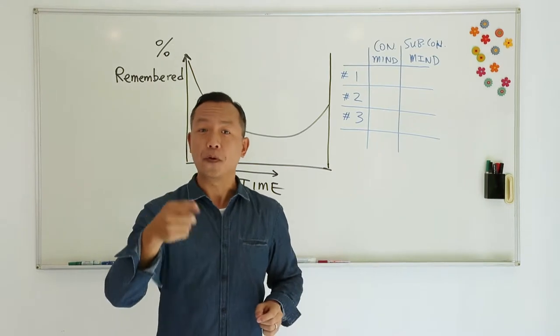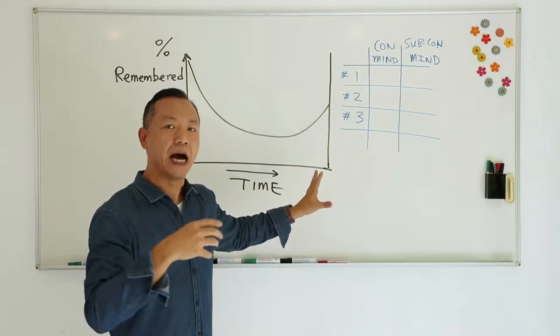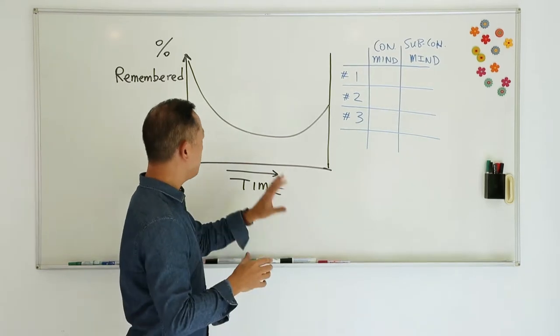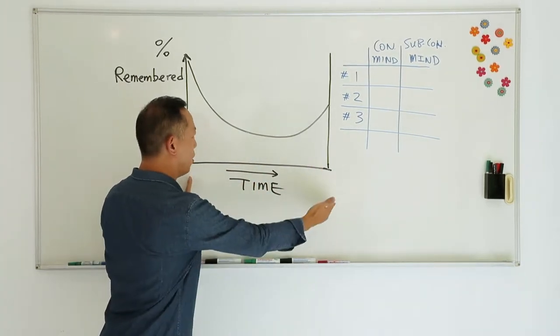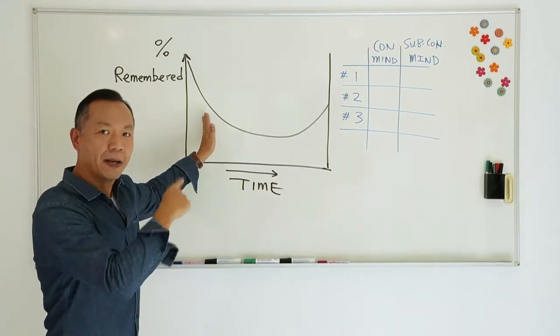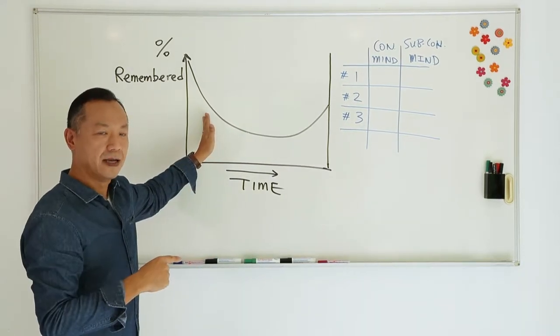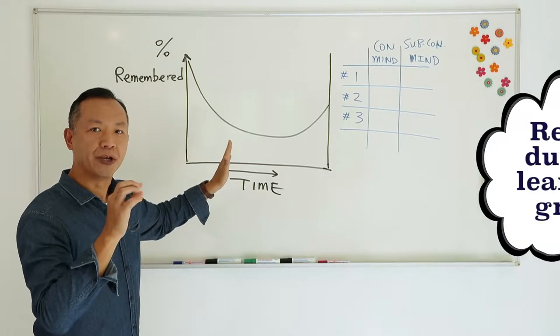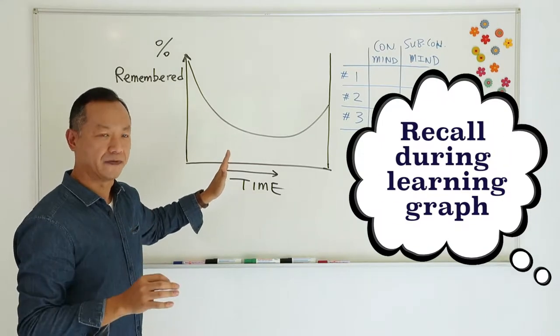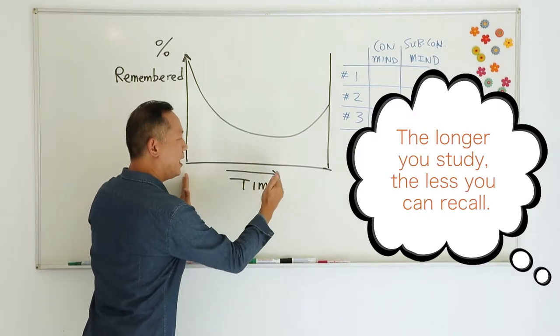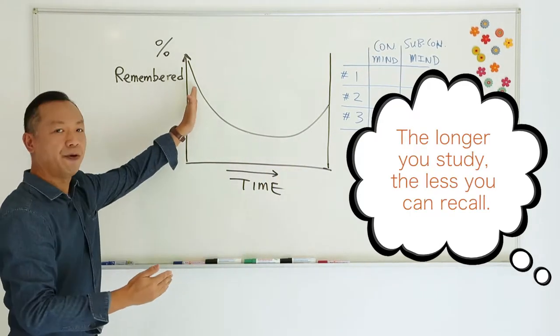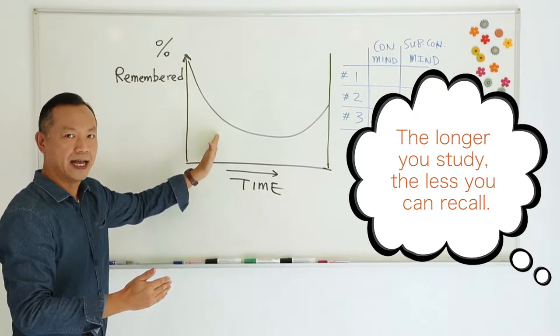Let's go through the brain science behind our learning process. First of all, when you study as time goes on, do you remember more and more or less and less? This curve is called the recall during learning graph. What does it show? It shows that as you study for longer and longer, you actually remember less and less.